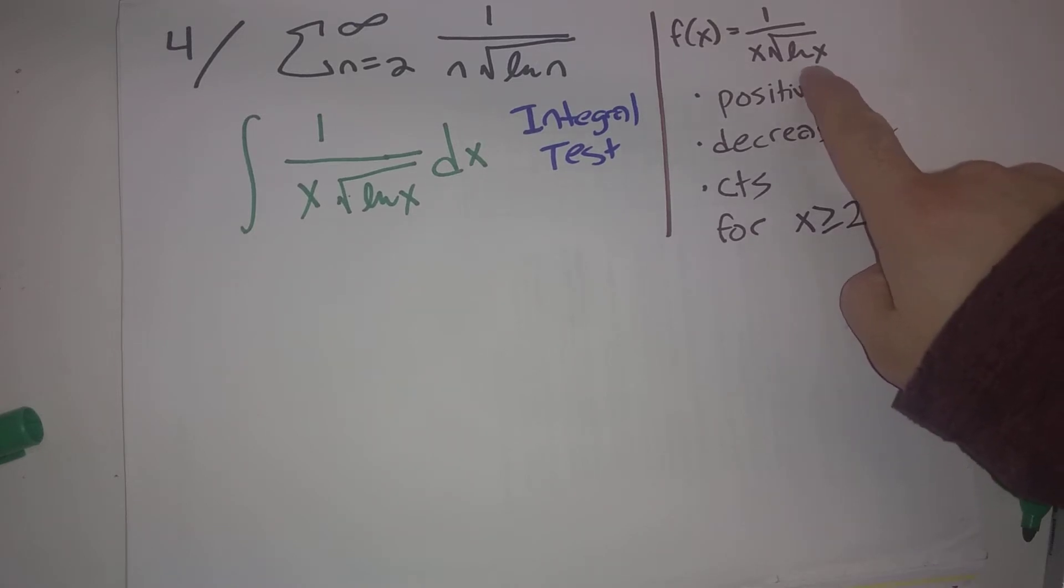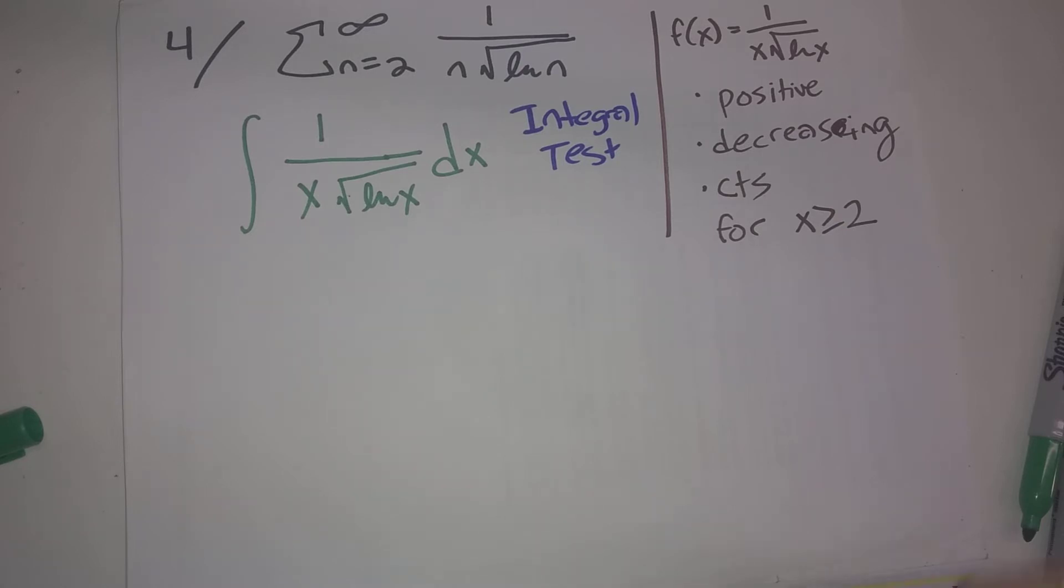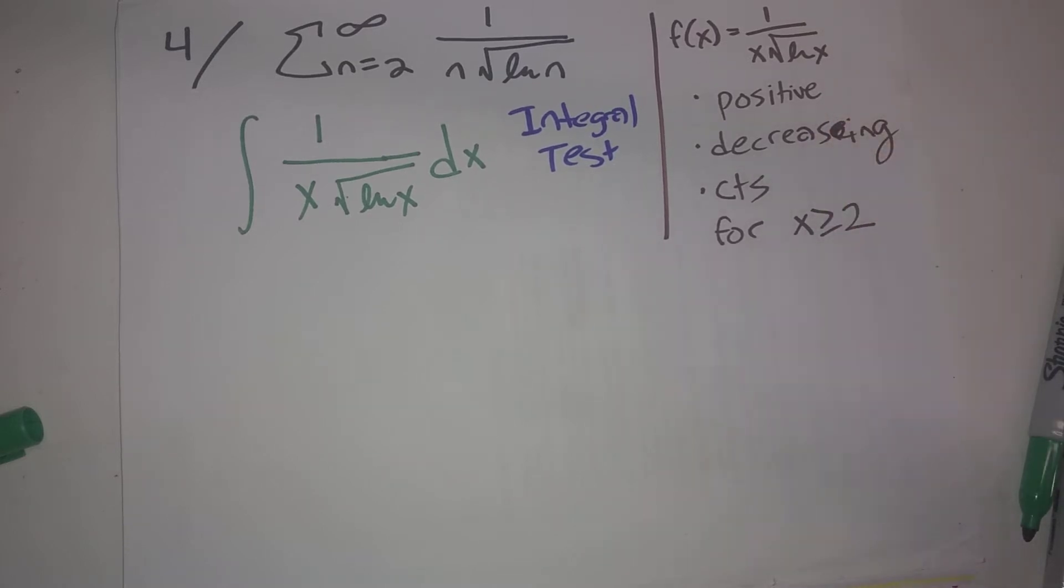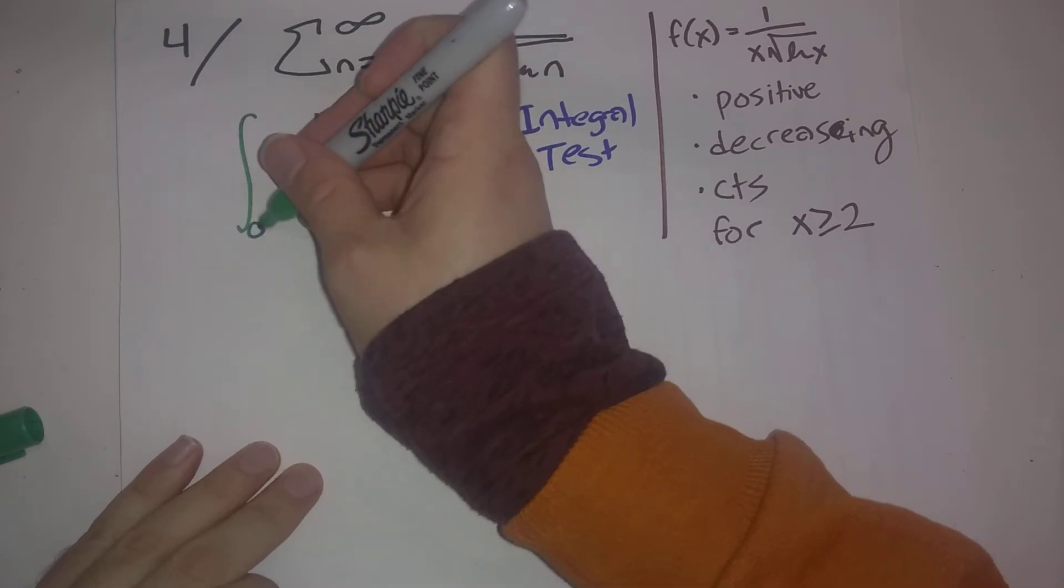So we don't have to worry about natural log of x being negative, taking a square root of something negative, or ending up with natural log of x equals 0, that's outside of our concern. Because f of x is positive, decreasing, and continuous for x greater than or equal to 2, what that tells us is that